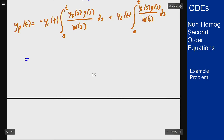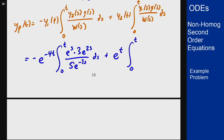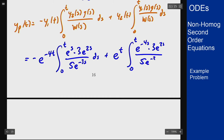Plugging in all the components, we get negative e to the minus 4t times the integral from 0 to t of e to the s times 3e to the 2s over 5e to the minus 3s, plus e to the t times the integral from 0 to t of e to the minus 4s times 3e to the s, all over 5e to the minus 3s.